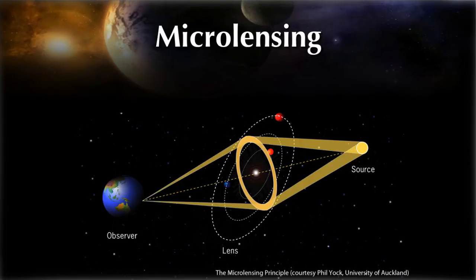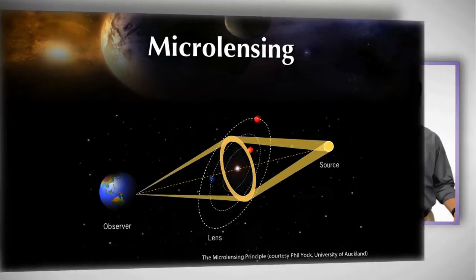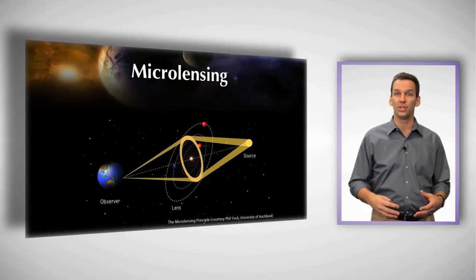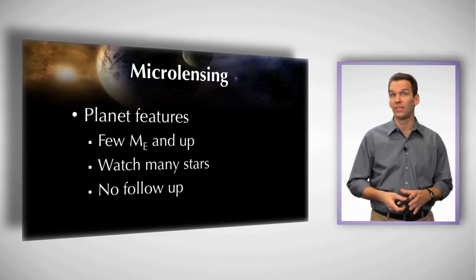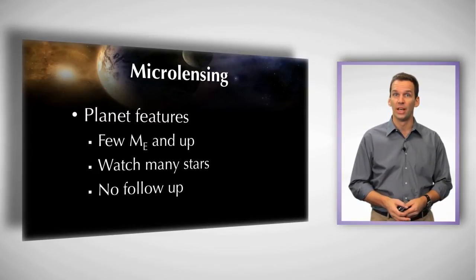And as it does so, if there's planets around this closer star, those planets will also cause a lensing, which gives us the capacity to detect planets around these other stars. And while we haven't found a lot of planets this way, this has the potential to find planets that are much smaller than the radial velocity technique. In fact, it has already found some in that fashion.